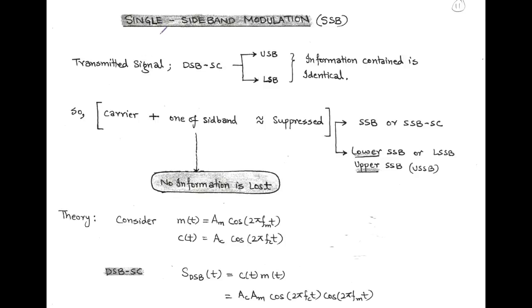The next topic is single sideband modulation, or SSB. In the last video lecture, we talked about double sideband suppressed carrier as a transmitted signal. In double sideband suppressed carrier, the carrier part is suppressed and we have an upper sideband and a lower sideband. We know that the information contained in both bands is identical.